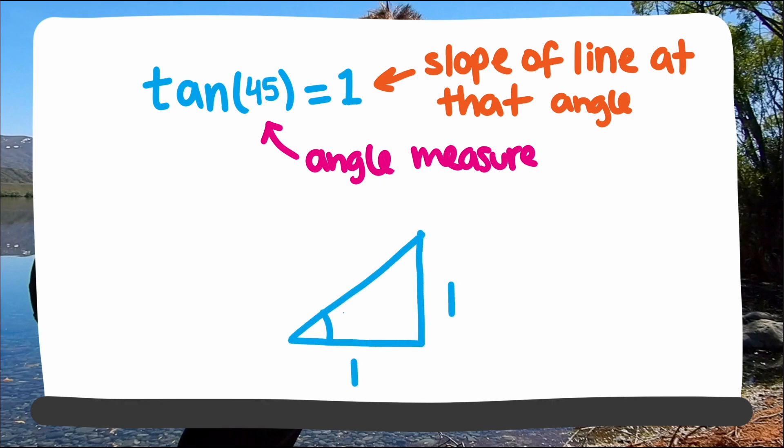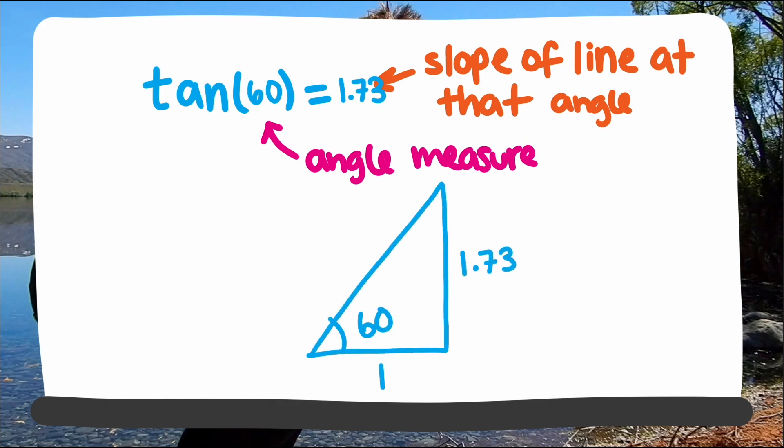If we take the tangent of 60 degrees we get a value of about 1.73, so two lines diverging at 60 degrees will have a ratio of 1.73 units up for every unit over.